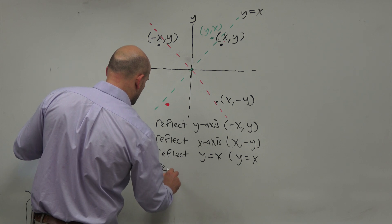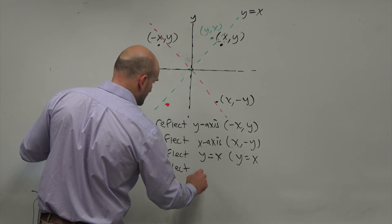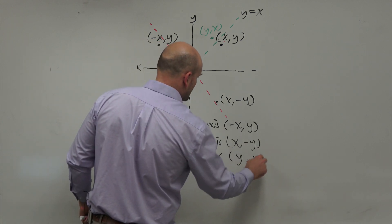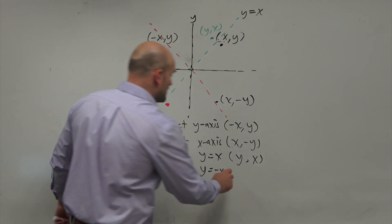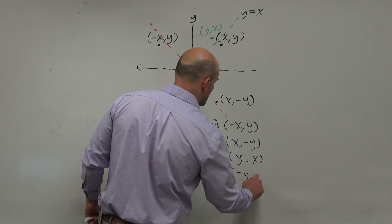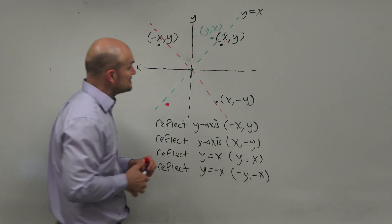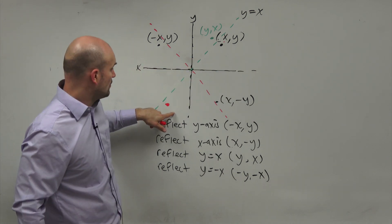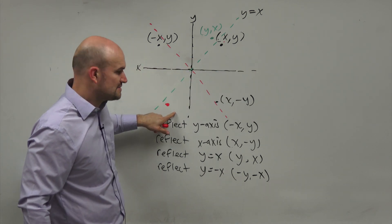So if I do reflect the Y equals negative X, not only am I going to swap the coordinates, but I'm also going to negate them. And why does negating make sense? Because I'm going from the first quadrant, which everything was both positive, now to the third quadrant, where both terms are going to be negative.